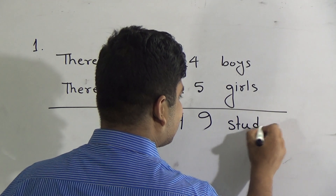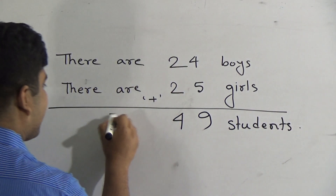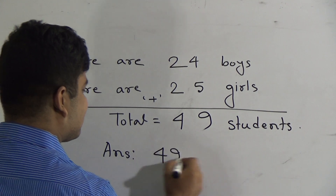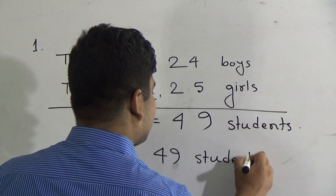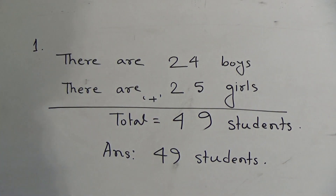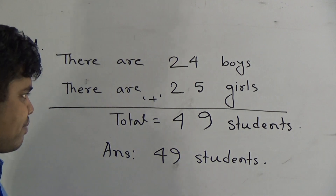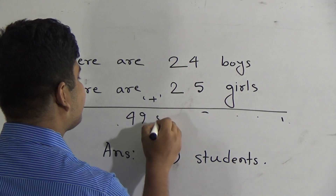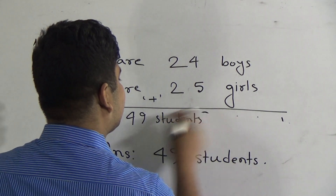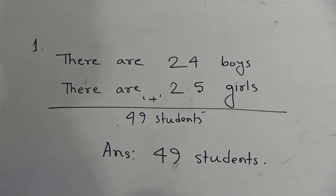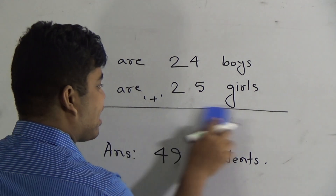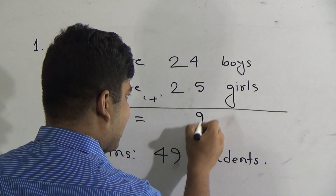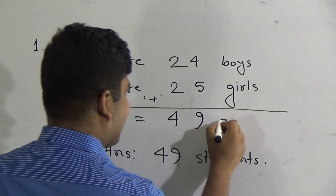We write 'total' and this is the answer. As our solution is done, we must write the answer. If you don't write the answer, some marks will be deducted from your answer script. Some of you write just '49 students' — this is absolutely wrong. You must write it properly: write 'total,' then the equal sign, then 49 students in the correct row format.